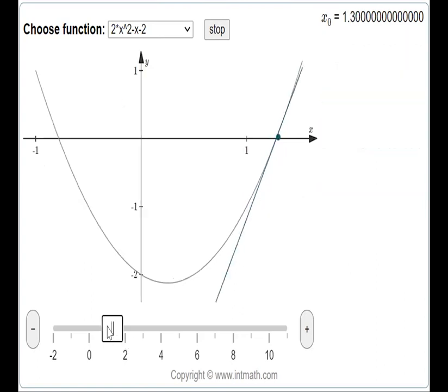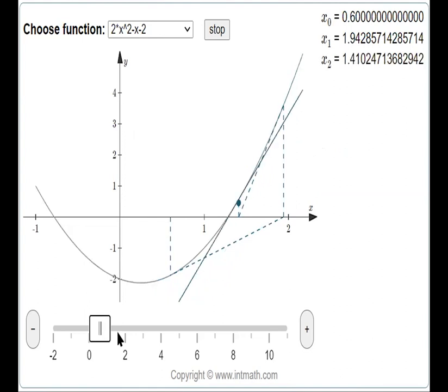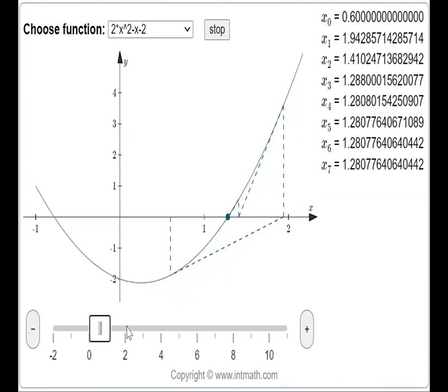If we choose a value that is closer but on the left side, it will do the same way by leading to the approximation of the x-intercept that's closer to that number.